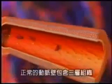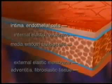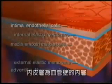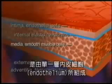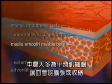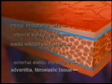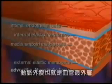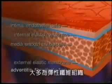The normal artery wall is composed of three layers: the intima, the media, and the adventitia. The intima, or inner layer, is composed of a single layer of cells called the endothelium. The media contains mostly smooth muscle cells that enable the vessel to dilate or constrict. The adventitia, or outermost layer, is composed mostly of fibroelastic tissue.